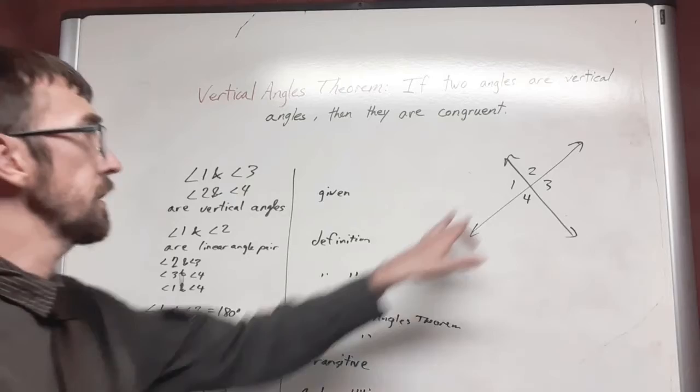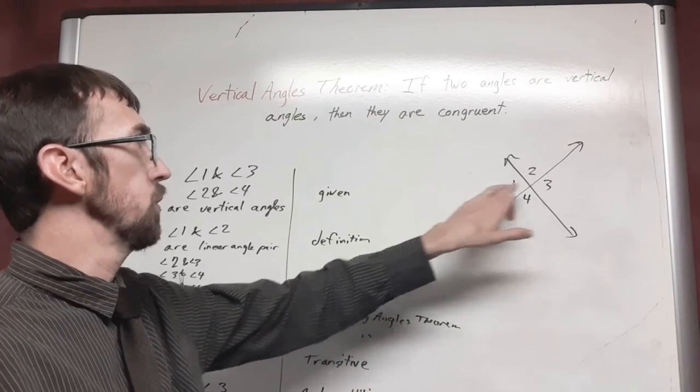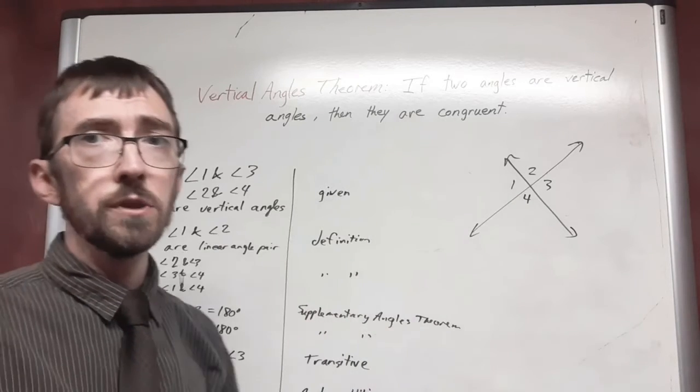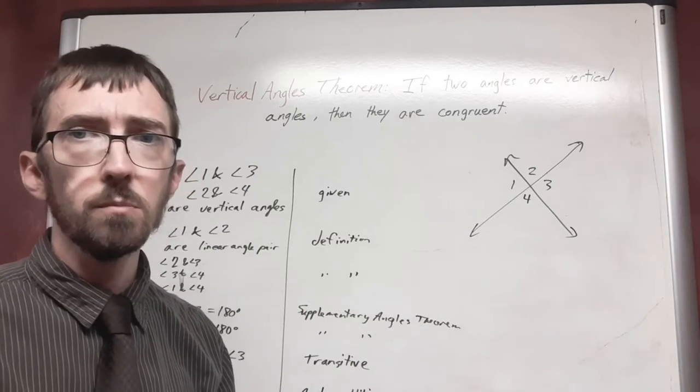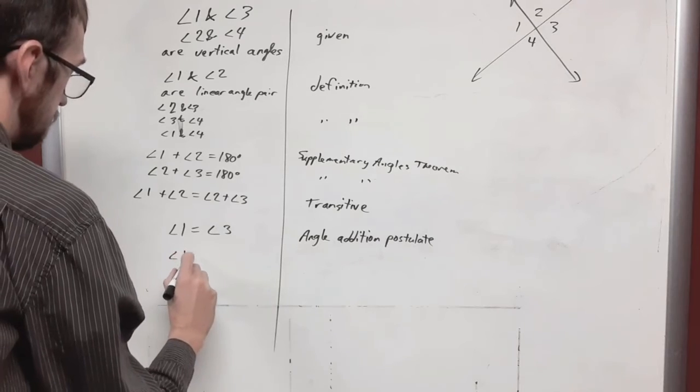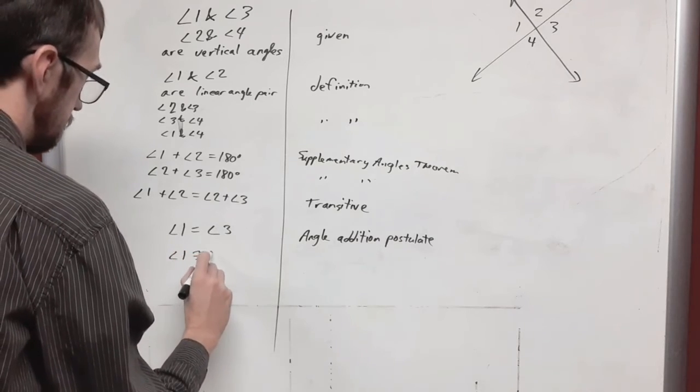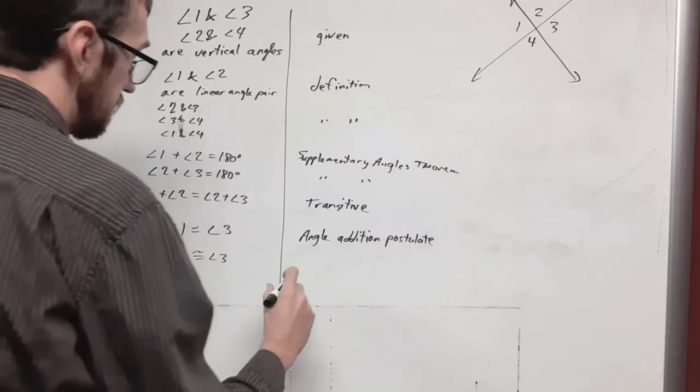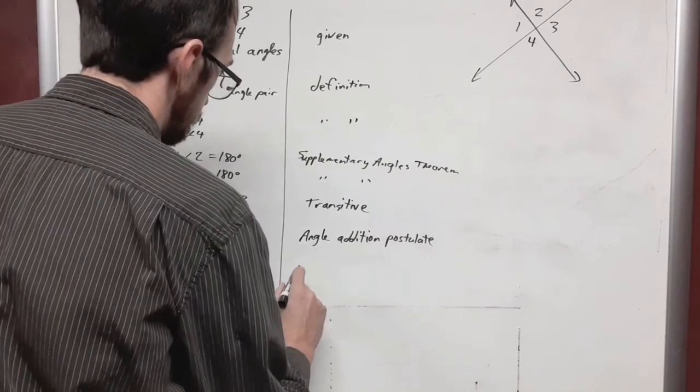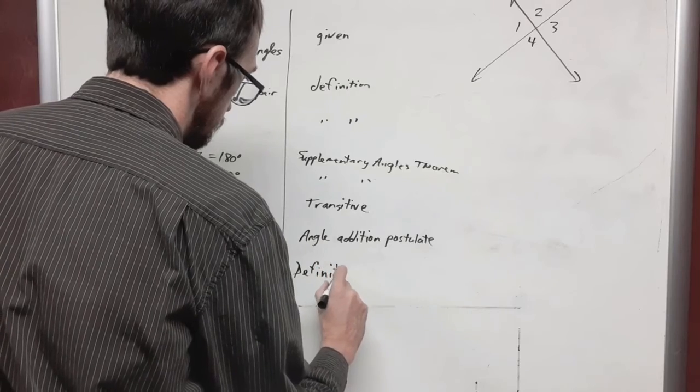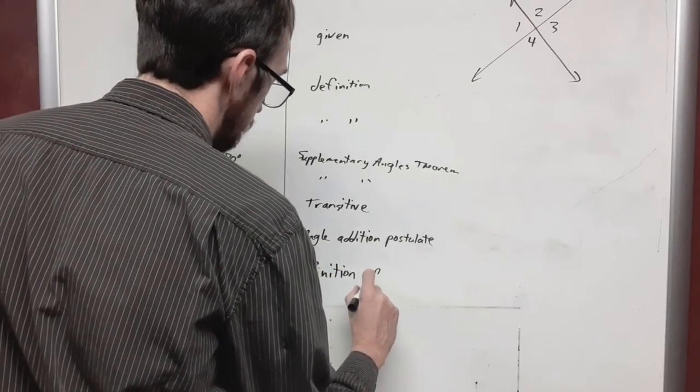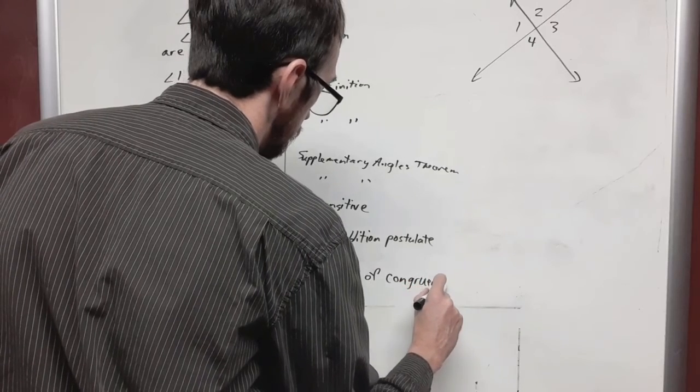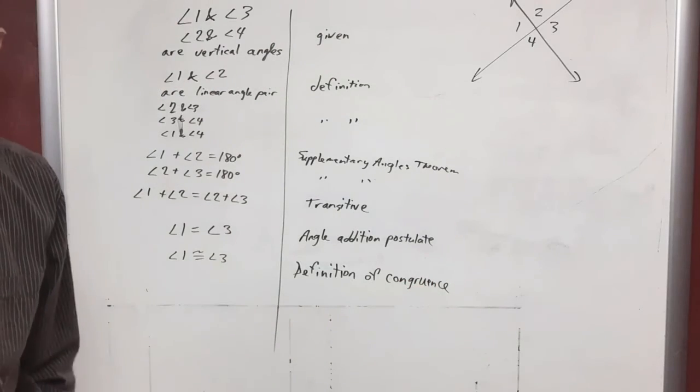And at this point we have shown that angle one and angle three are equal to each other. We really want to show that they're congruent. So that's really just one more step. So this is the definition of congruence.